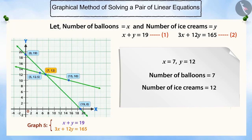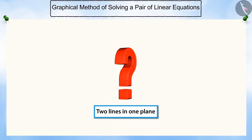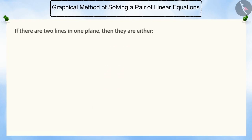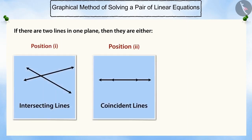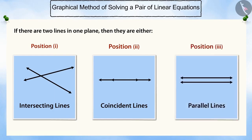In this example, you saw two straight lines intersect each other at one point. Can you think of two straight lines in one plane in any other position? We know that if there are two lines in one plane, then those lines are either intersecting, coincident, or parallel. These three conditions can be represented for a pair of linear equations in any two variables as follows.